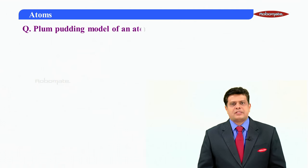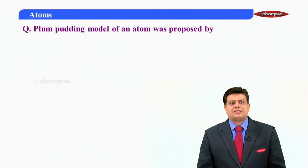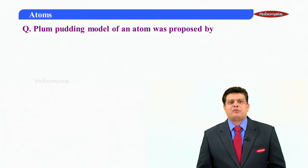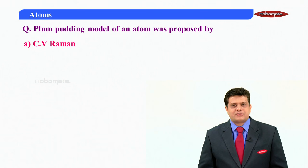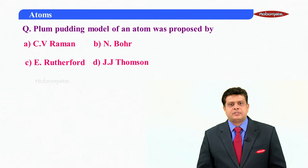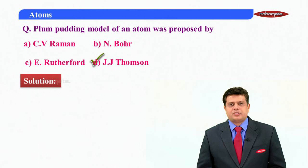Let's go to the next question, simple. Plum pudding model of an atom was proposed by. I don't think I should give the options, all of you know the answers. Anyway the options are C.V. Raman, N. Bohr, Niels Bohr, Ernst Rutherford, J.J. Thompson and your answer is J.J. Thompson. It is proposed by J.J. Thompson.